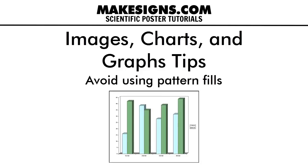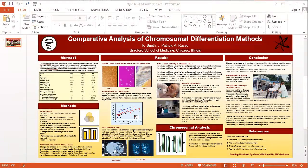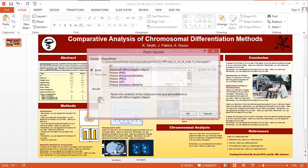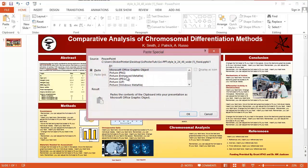If you absolutely must use a pattern, here's a workaround. Once the chart is placed on your poster in the right position and at the correct size, click the left mouse button on the chart so it's selected. Next, press CTRL-X to cut or remove the chart, then press CTRL-Alt-V for Paste Special. When the dialog box comes up, choose Picture PNG and press OK.